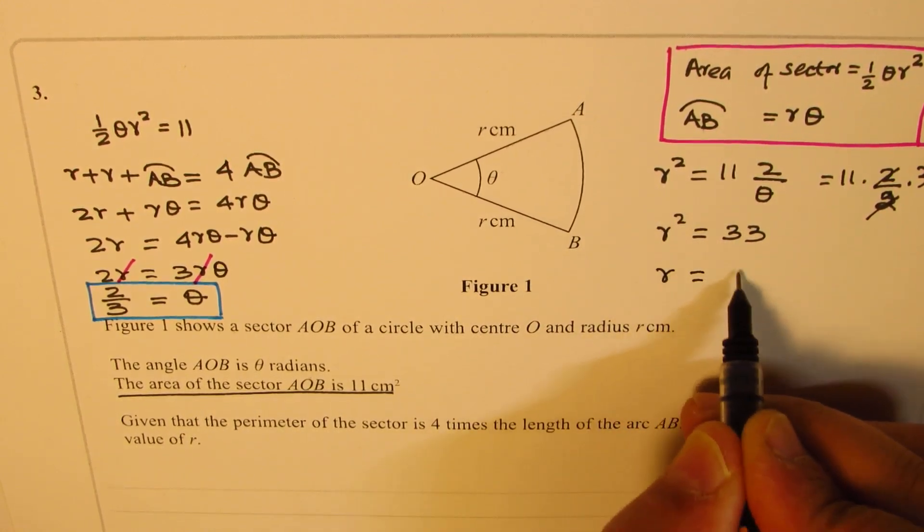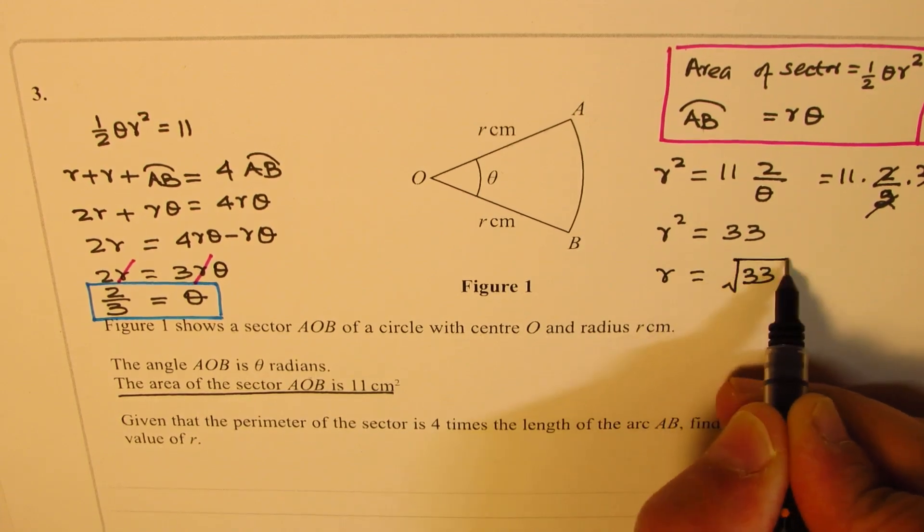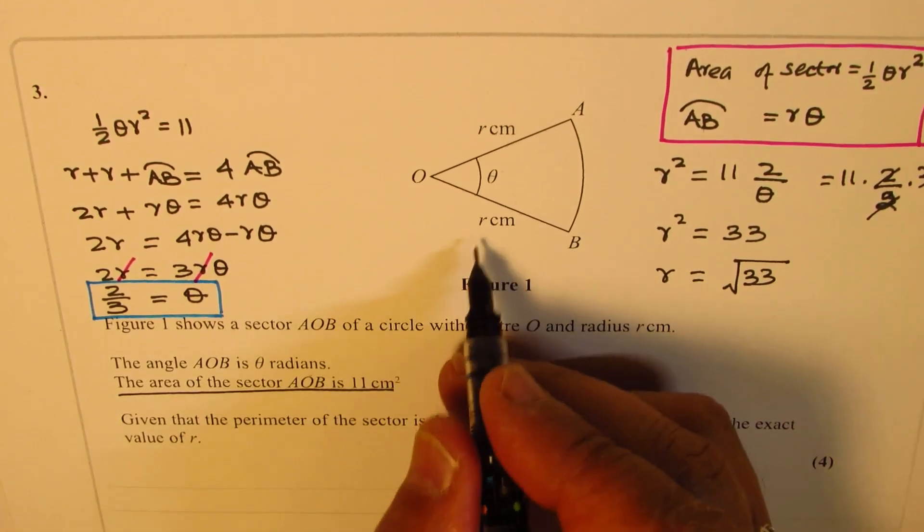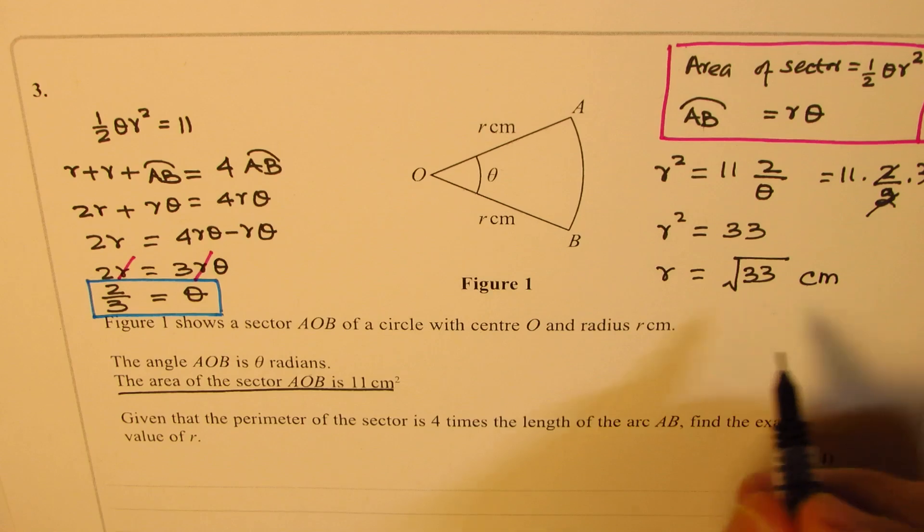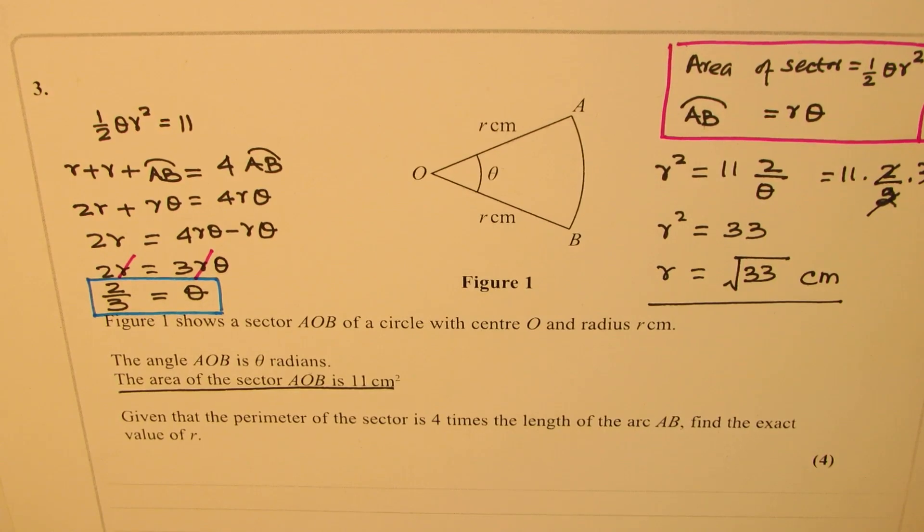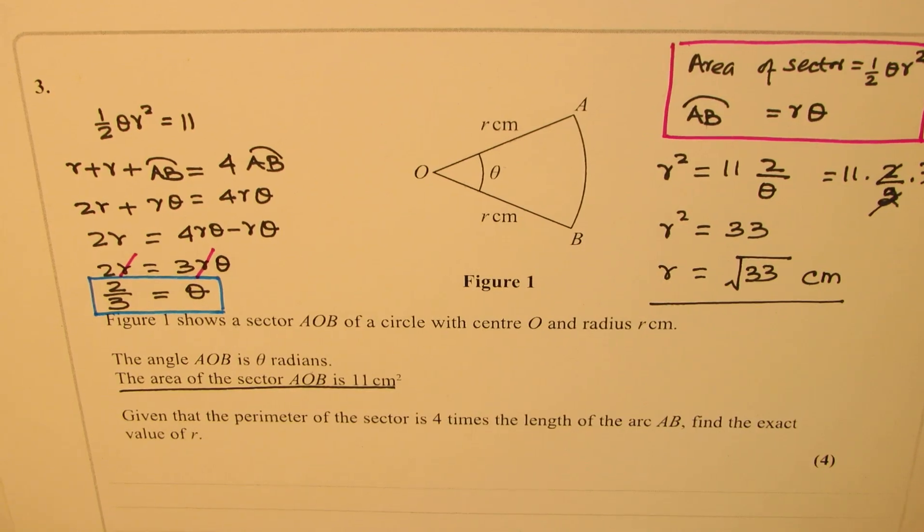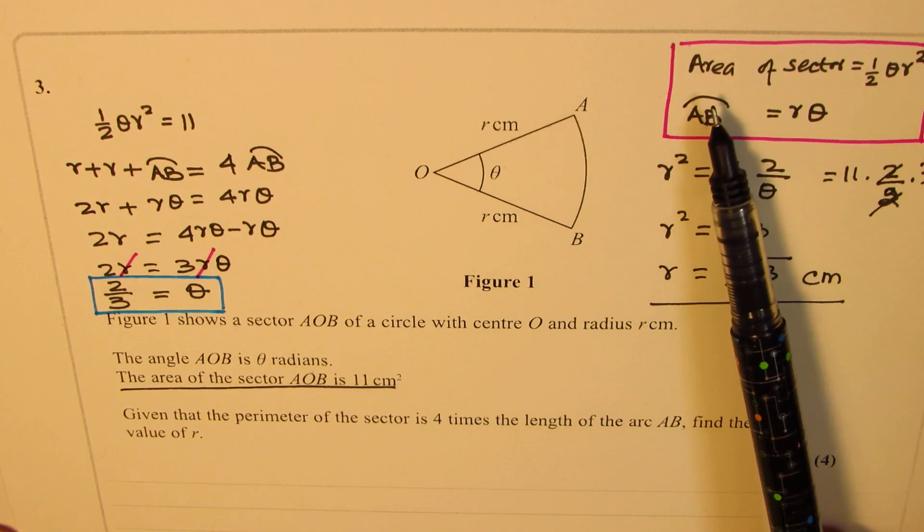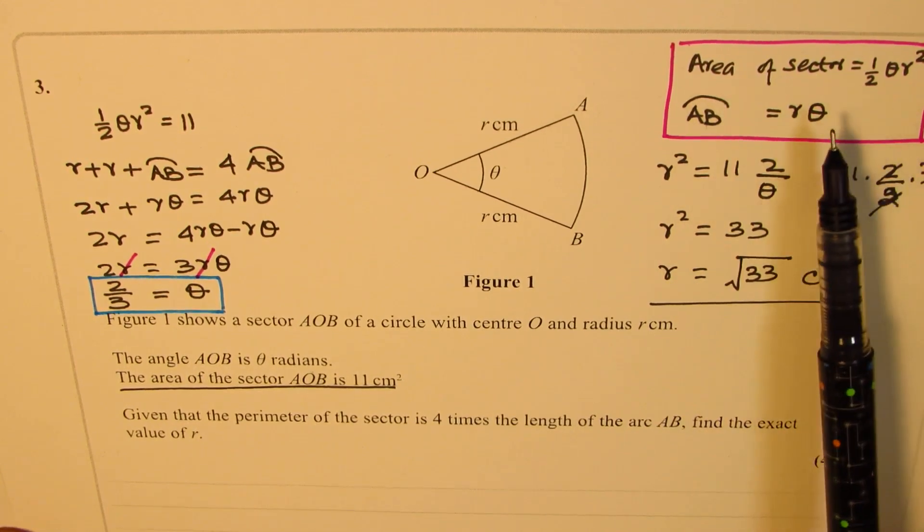r will be square root of 33. Units will be centimeters as given. So that is how we can find the exact value of r. These are the steps involved. What you need to know or review is basically the area of the sector.